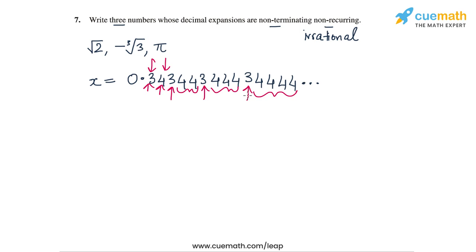Similarly, let's construct two other numbers with non-terminating, non-recurring expansions. So let's take y and let me take a negative number this time. So let's take y equal to minus one point. Let's say 0 1, 0 0 1, 0 0 0 1, 0 0 0 0 1 and so on.